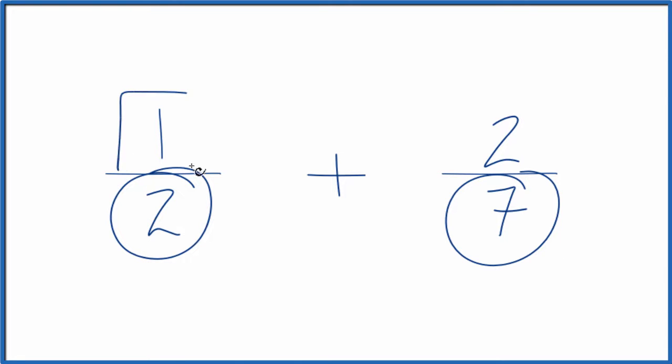If the denominator is the same, then we can just take and add the numerators, and we'll figure out the sum for one-half plus two-sevenths.